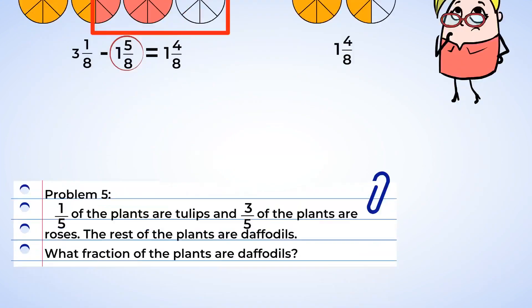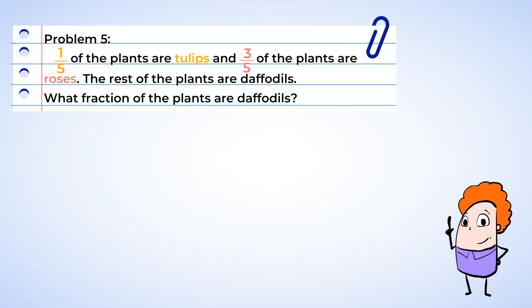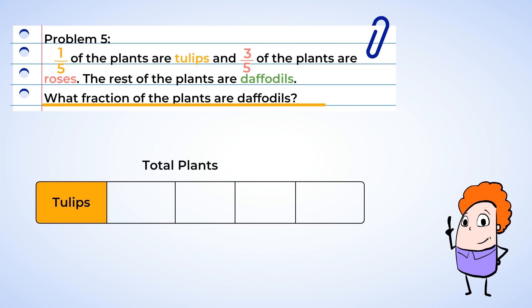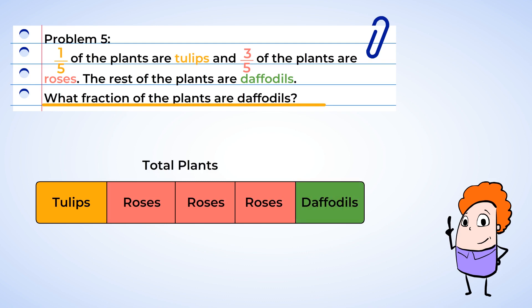Your local school is doing a plant sale to raise money. One-fifth of the plants are tulips and three-fifths of the plants are roses. The rest of the plants are daffodils. What fraction of the plants are daffodils? Let's create a box split into five parts. Since one-fifth are tulips, we shade in one part. Since three-fifths are roses, we shade in three more parts. Four-fifths of the rectangle is already shaded, and since there's only one section left, that represents the daffodils. So one-fifth of the flowers are daffodils.